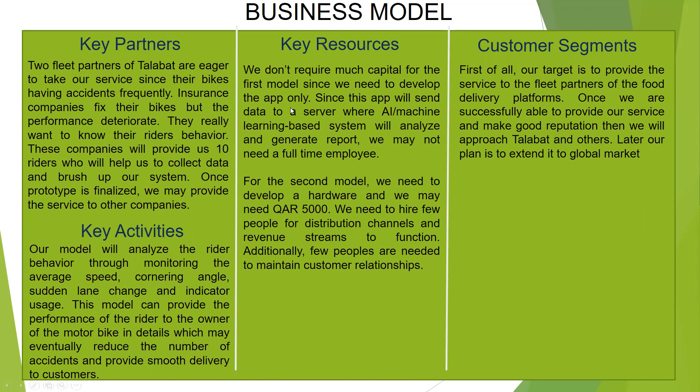For key resources, we don't require much capital for the first phase since we only need to develop the app and we have people among us to do that. For the second phase, developing the hardware will require approximately 5,000 riyals. We need to hire a few people for distribution channels, revenue streams, and customer relationship management. For customer segments, our initial target is fleet partners of food delivery platforms. Once we build a good reputation, we will approach Talabat and others, and later plan to extend to the global market.